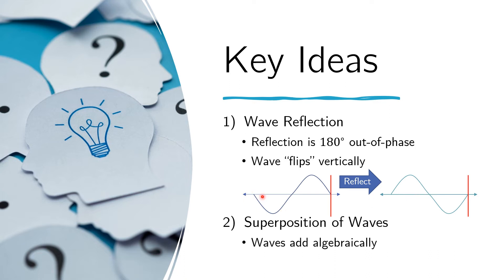On the other hand, if they had the same sign, for example if you have this wave and you add it to itself, then the resulting wave would just be twice the original. That's what we mean by superposition of waves: we just add them algebraically.